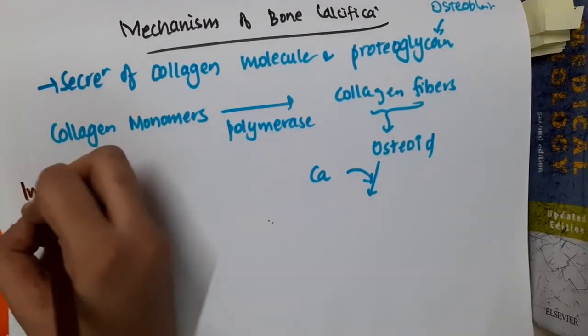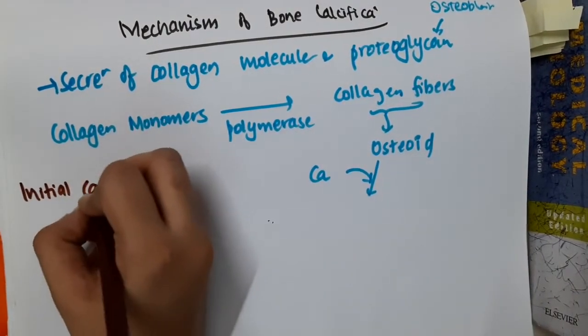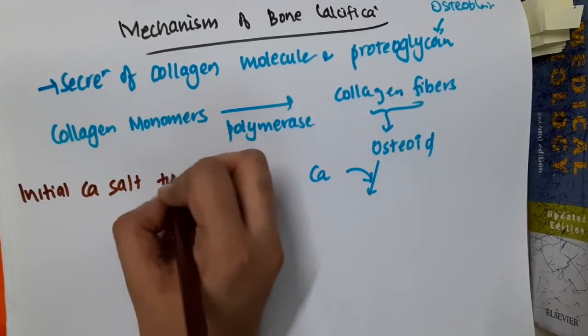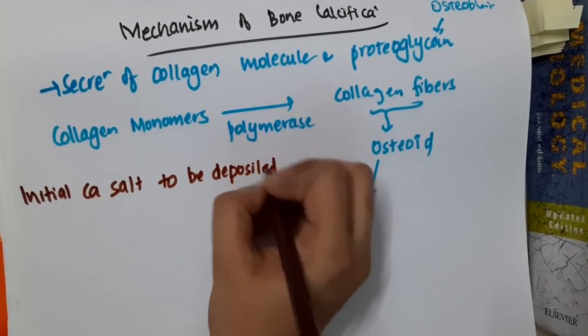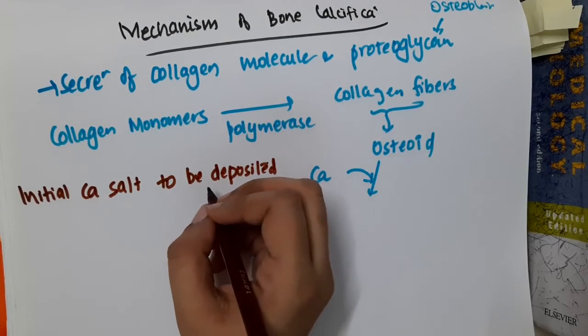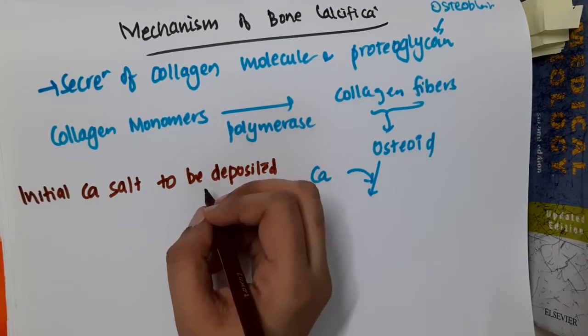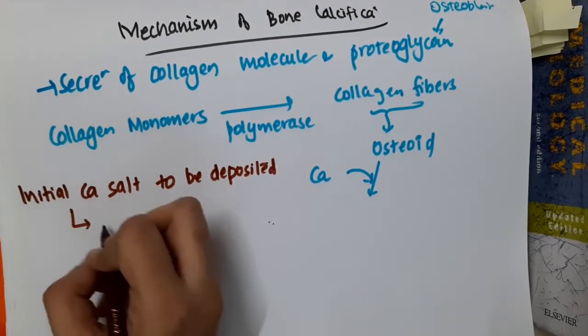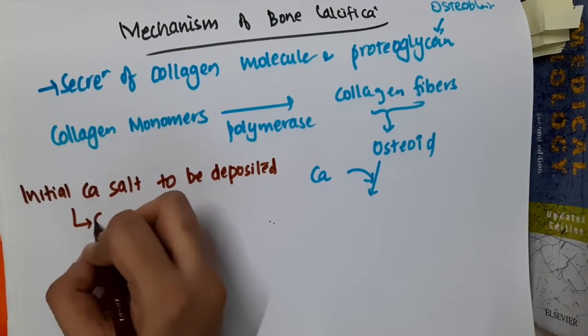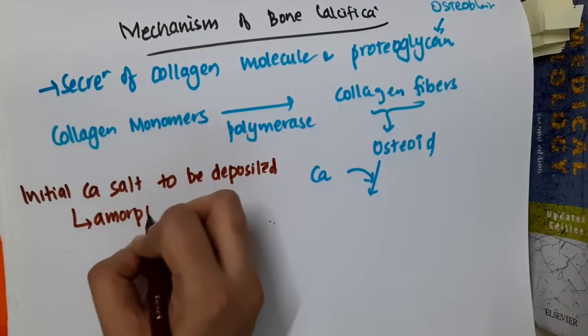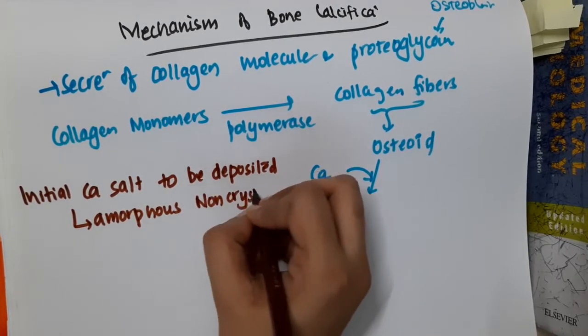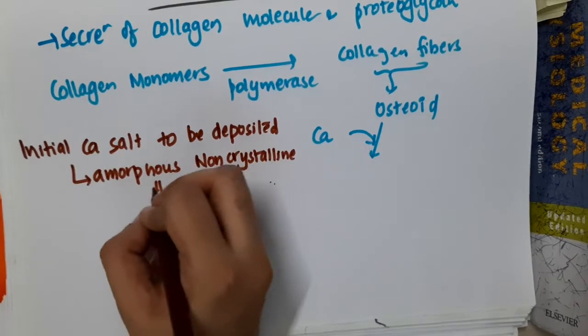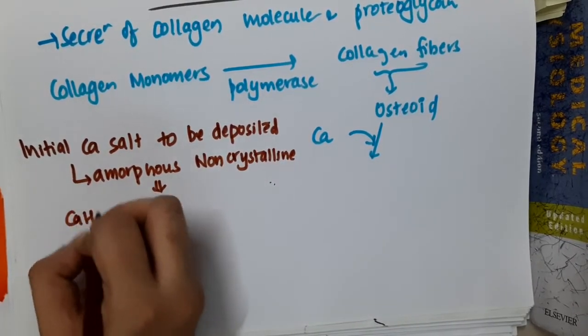What is the initial calcium salt to be deposited? It is an amorphous, non-crystalline calcium salt. This is actually a mixture of calcium hydroxy phosphate 2H2O and calcium phosphate 3H2O.